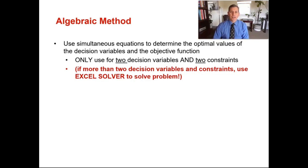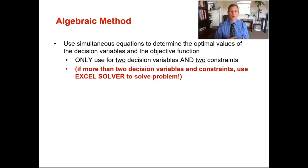We're going to go over the algebraic method of linear programming. We can use this method when we have two decision variables and two constraints, and it gets us right to what our optimal decision variables will be and what our maximum profit would be. We can use the algebraic method again when you have two decision variables and two constraints.